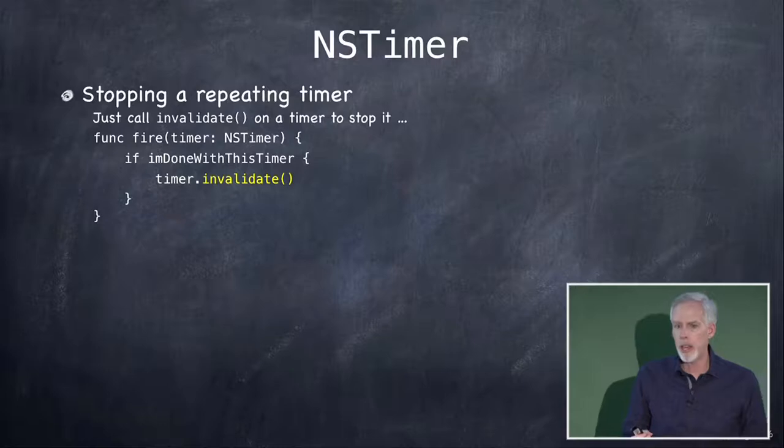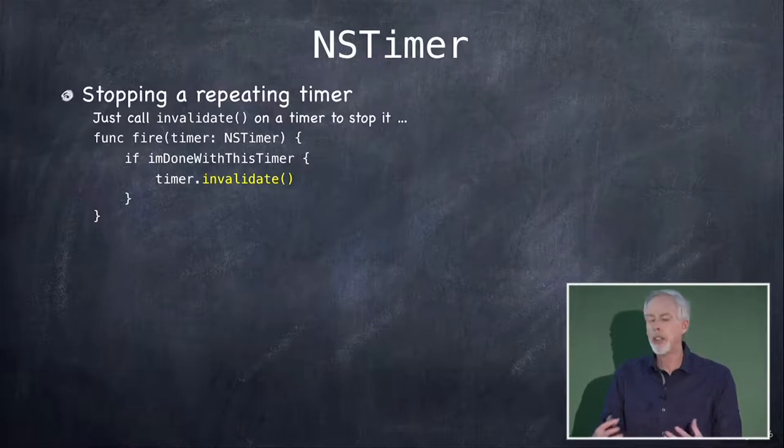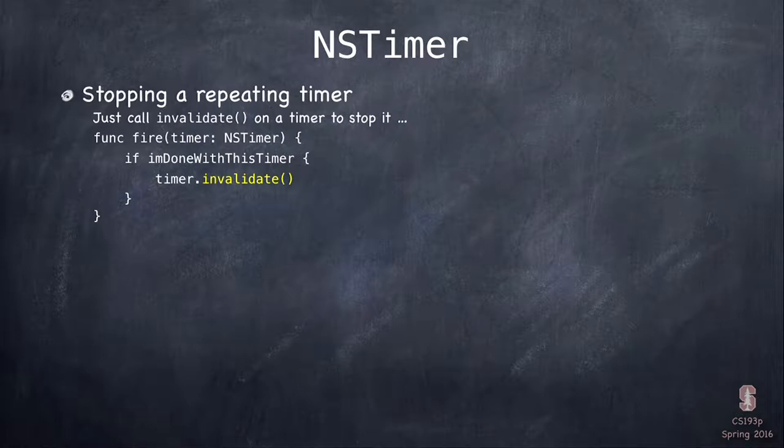If you have a repeating timer and want to stop it, call invalidate on the timer. But be warned: once you call invalidate, that timer is no longer valid and you can't restart it. It's usually a bad idea to have a strong pointer to an NSTimer. It's much better to make your pointers to NSTimers weak. When you invalidate it, no one has a strong pointer anymore, it leaves the heap, and your weak variable gets set to nil.